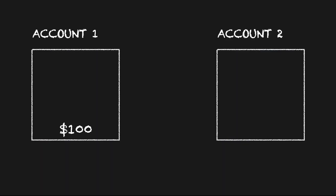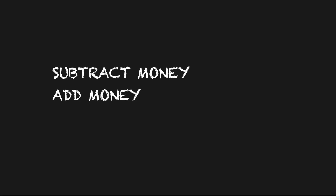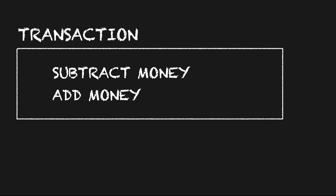That being said, if we add money to this account first and then something happens to the database, we've actually created extra money and everyone gets rich. But all jokes aside, both of these steps need to happen in order to keep the data consistent. So we can wrap them in a transaction, which will ensure that each step runs successfully. Otherwise it will automatically roll back or undo any of those changes that have been made.